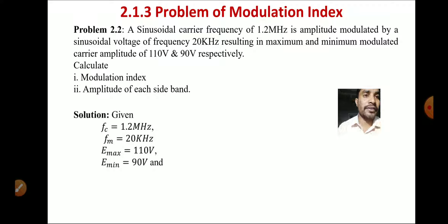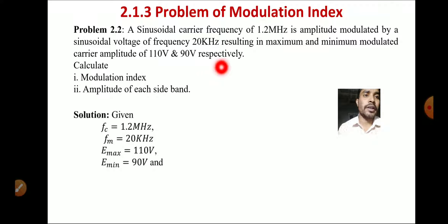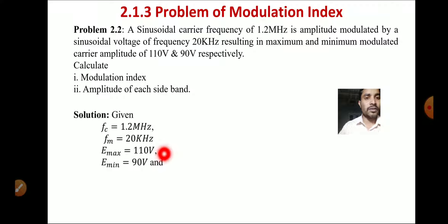Problem 2: A sinusoidal carrier of frequency 1.2 MHz is amplitude modulated by a sinusoidal voltage of frequency 20 kHz, resulting in maximum and minimum modulated carrier amplitudes of 110 volts and 90 volts respectively. Calculate the modulation index and amplitude of each sideband. Given: E_max = 110 V, E_min = 90 V.